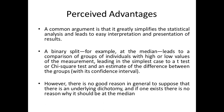A binary split using the median leads to a comparison of groups of individuals with high or low values of the measurement, leading in the simplest case to a t-test or chi-square test and an estimate of the difference between the groups. The word binary means two, so this means dividing your data set directly into two categories. The median is commonly used because it is the central value of the data set and can easily divide it into two equal halves.